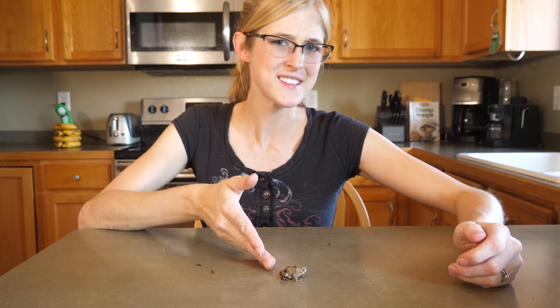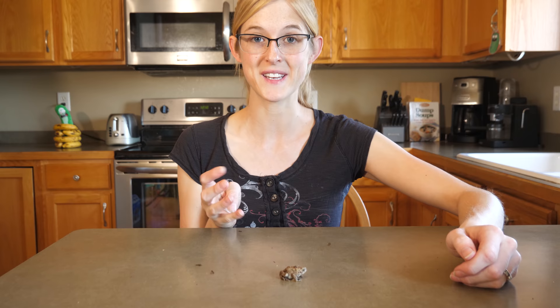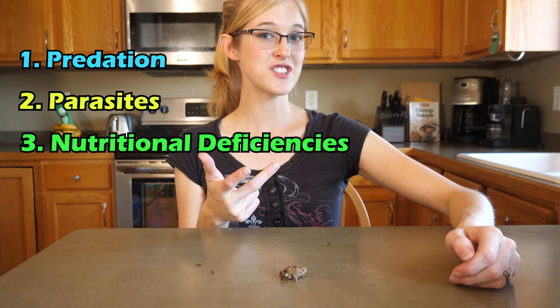Although we don't know exactly what happened to this little toad's eye, we do know that there are four main causes for deformities in amphibians: predation, parasites, nutritional deficiencies, and contamination or pollution.